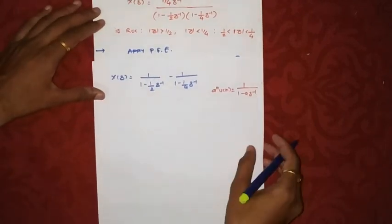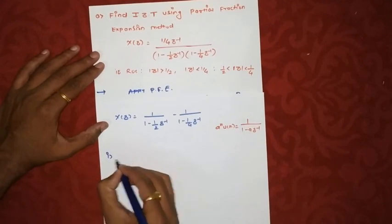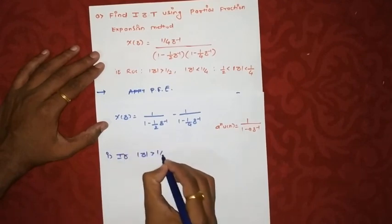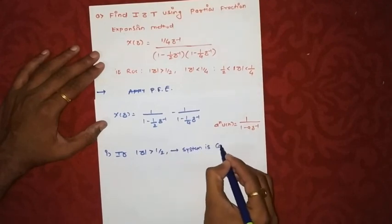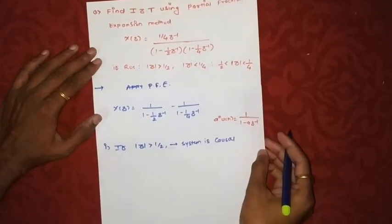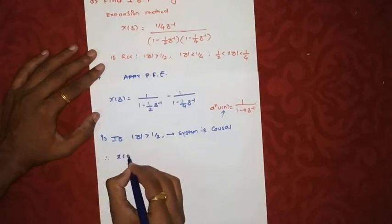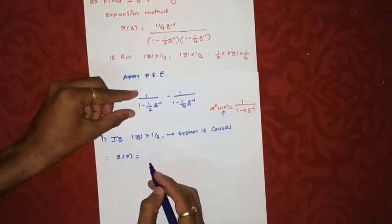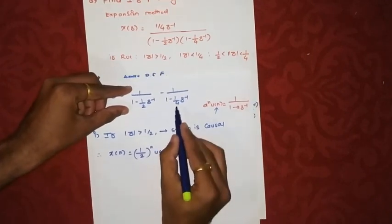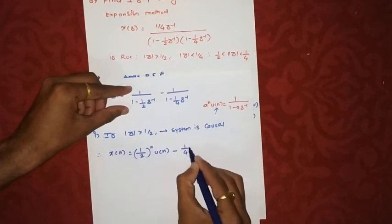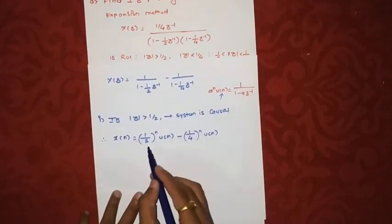We need to find the inverse Z-transform for three ROC conditions. In the first case, if ROC is |z| > 1/2, the system is causal or right-sided. Therefore x(n) = (1/2)ⁿ·u(n) − (1/4)ⁿ·u(n), since both terms are causal.